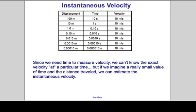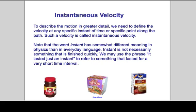Instantaneous velocity is simply how fast you're going at some point in some time. Now, to describe motion in greater detail, we need to define the velocity of a specific instant in time along the path. Such a velocity is called an instantaneous velocity. Note that the word instant has a somewhat different meaning in physics than in everyday language. In everyday language, 'instant' may refer to something that lasted a very short time interval.